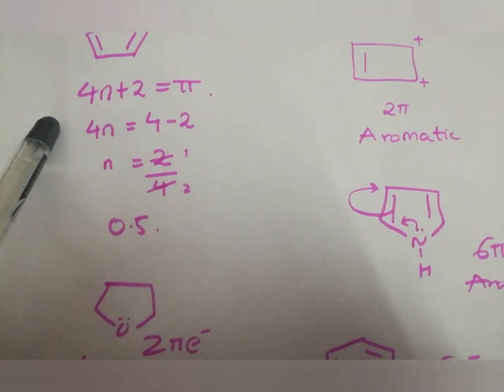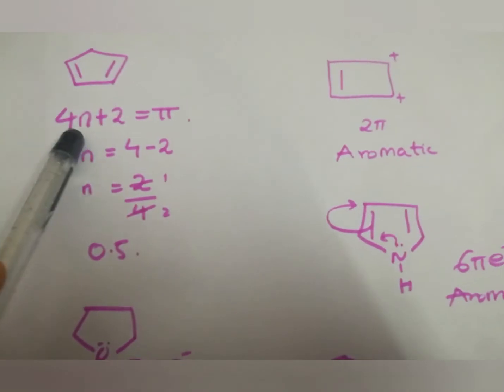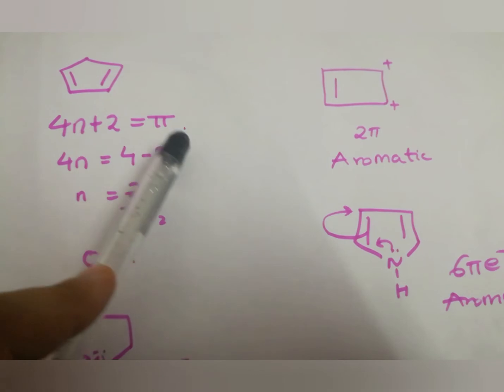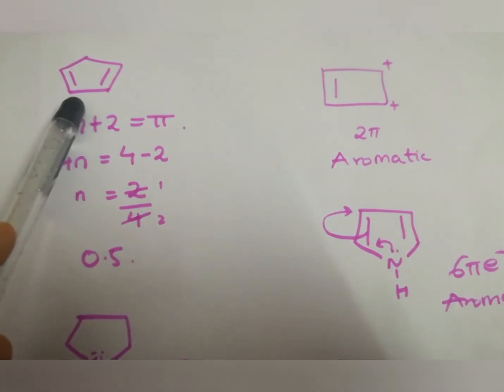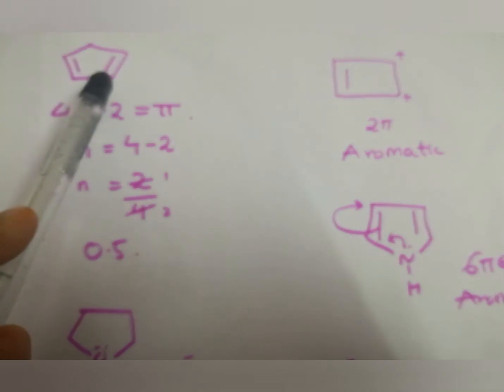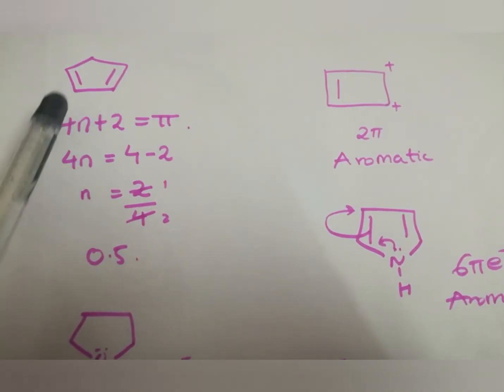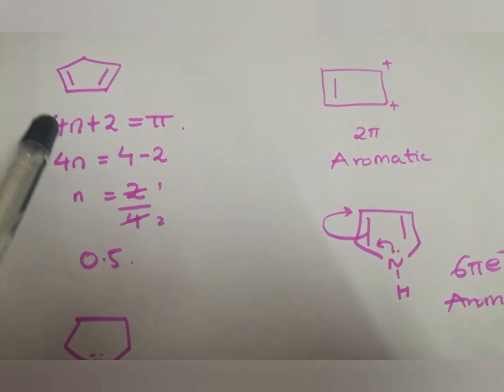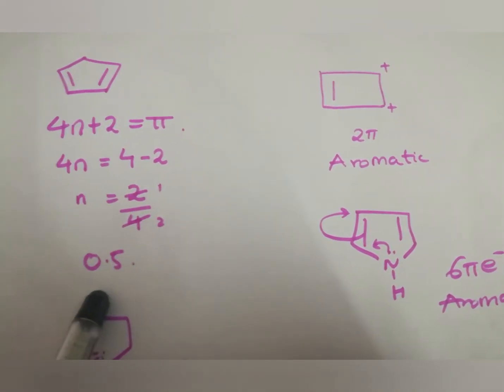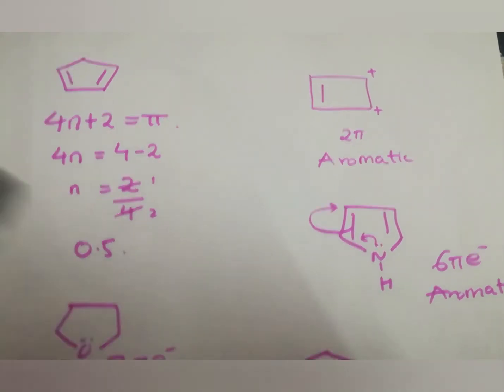Whereas, in this case, this is the formula of how we calculate the pi electrons. 4n plus 2 pi equals to pi electrons. Over here, there are 4 electrons. It is 4n and we get an integer. It is nothing but an anti-aromatic compound.